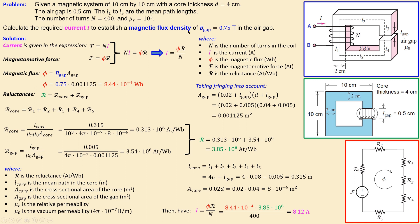By applying a current of 8.12 amperes, the magnetic flux density in the air gap will be 0.75 tesla. If you have questions, leave them in the comments. For a more introductory treatment, see example number one on magnetic circuits. Thanks, and see you next time!